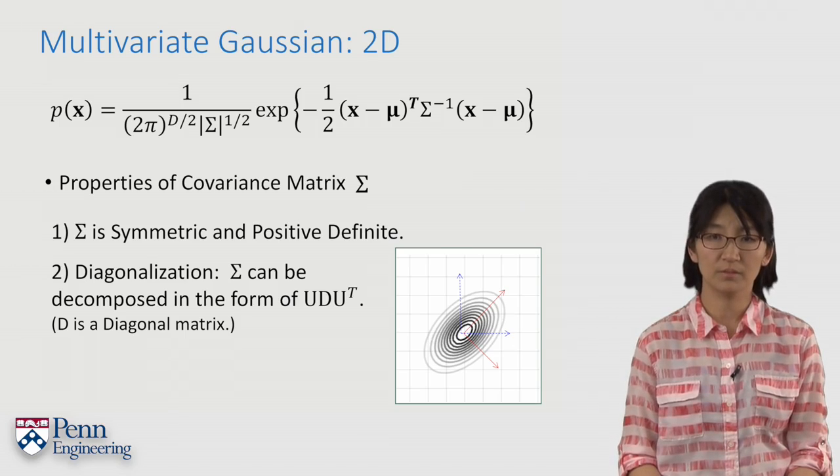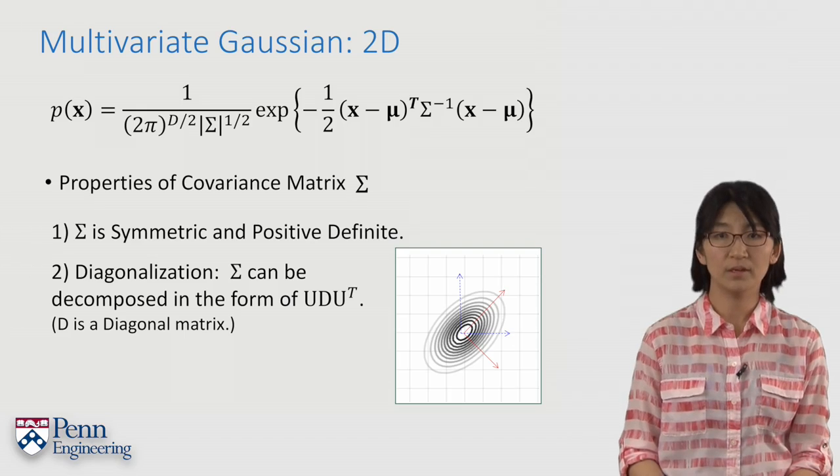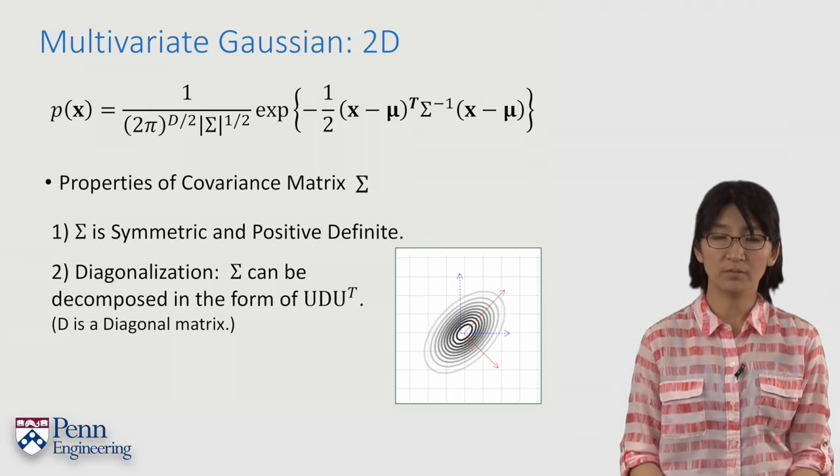We can decompose the covariance matrix to reveal the basis of transformation using algorithms for eigenvalue decomposition.